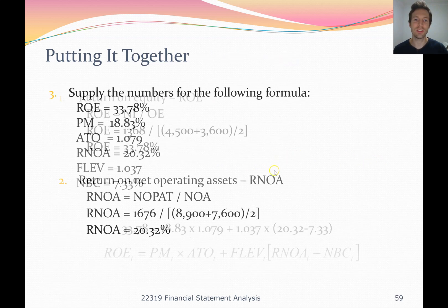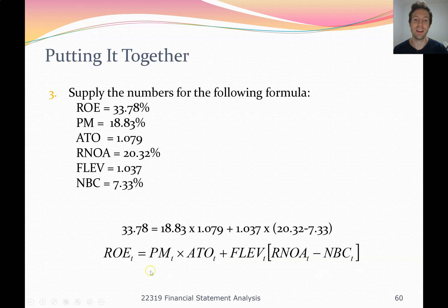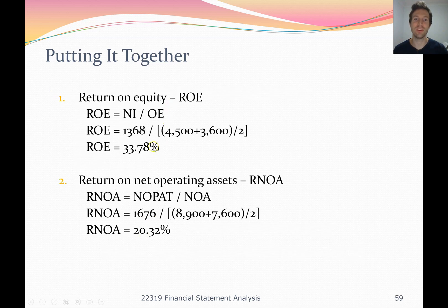For the final question, supply the numbers for the advanced DuPont analysis formula. I'll leave these to calculate yourself for practice, but we've got the answers you'll need. Profit margin times asset turnover equals our return on net operating assets, plus financial leverage times spread, which shows us the effect of financing on our return on equity. We add up the effect of operations and the effect of financing to get return on equity — it's going to equal 33.78, exactly the same as when you did it the simple way.